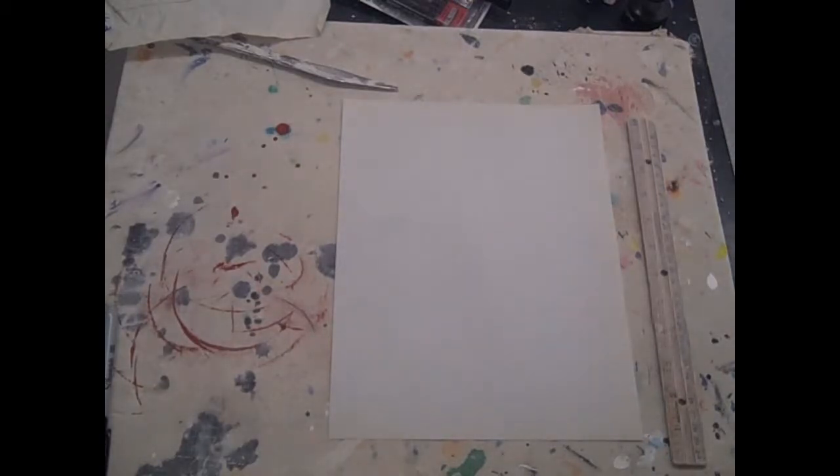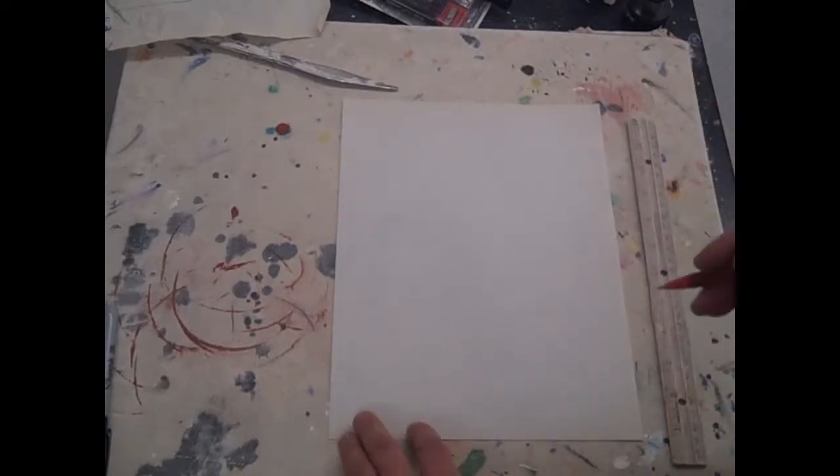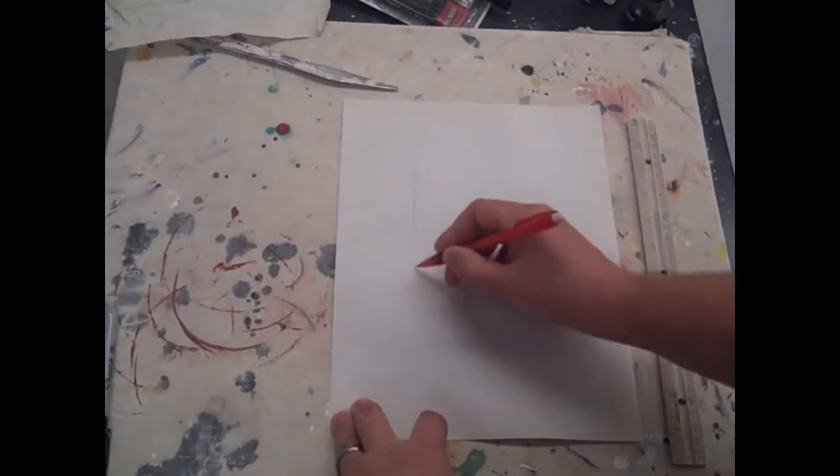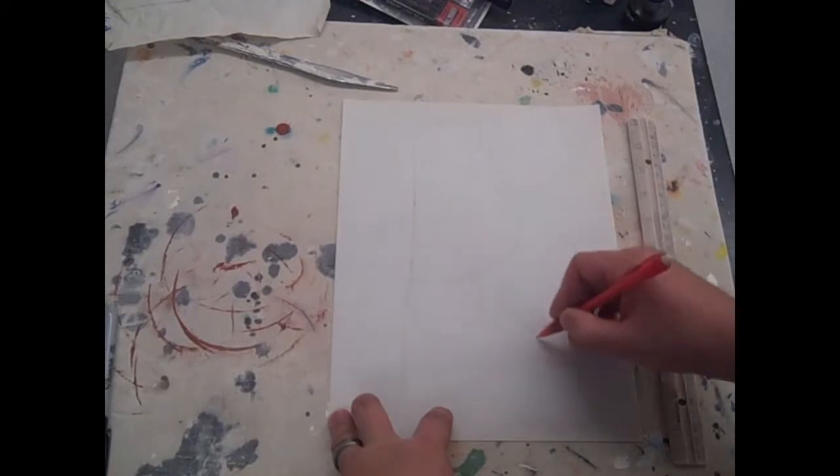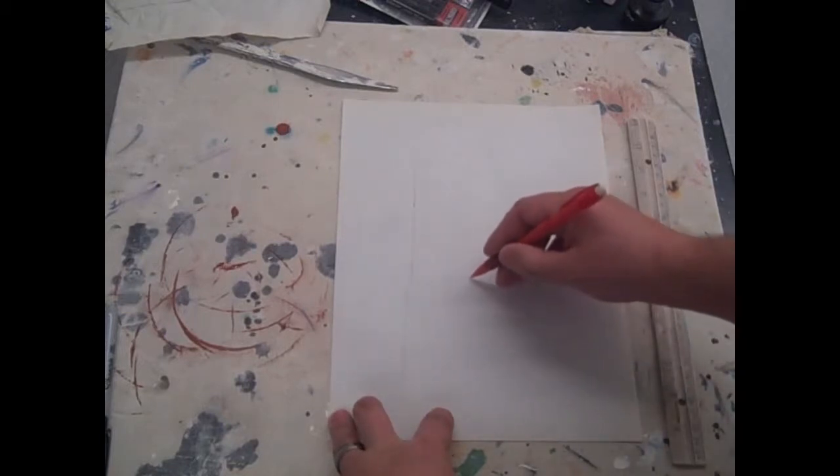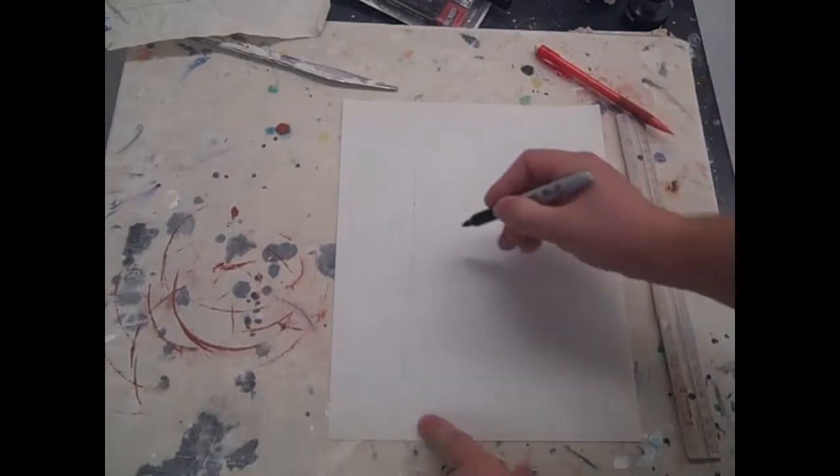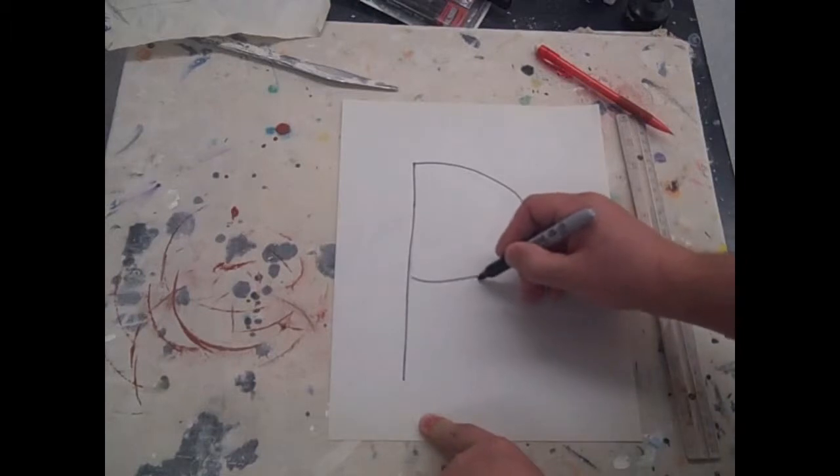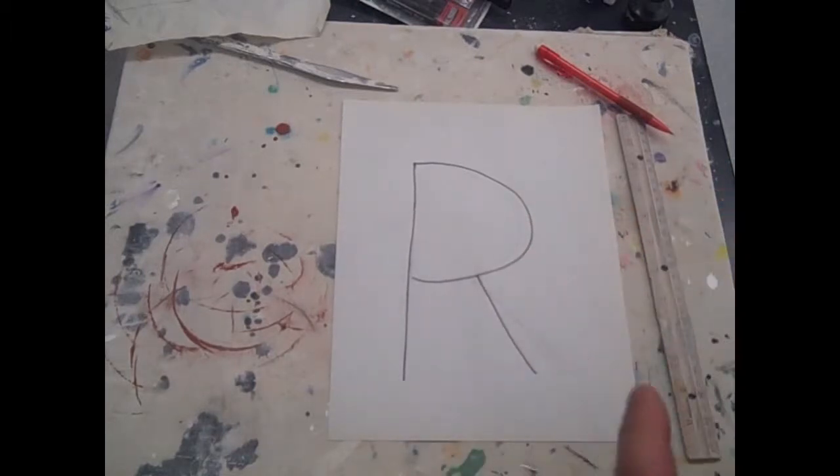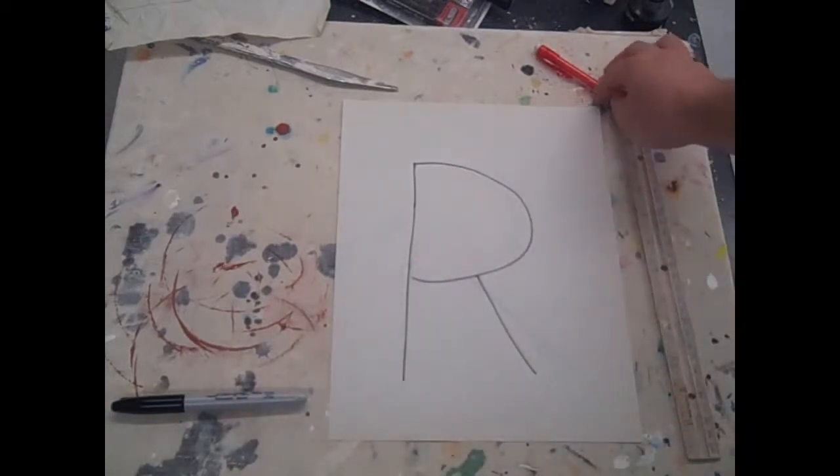First of all, you want to just draw your letter, just a nice stick letter and mine is an R. So I'll just go in and draw just a nice big R. You probably can't see that so after I draw it with pencil I'll go in and draw it with marker just so you can see it. You don't need to draw it with marker, but that's just so you can see.